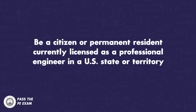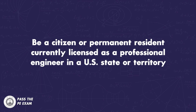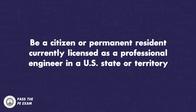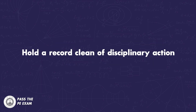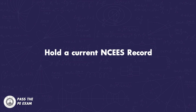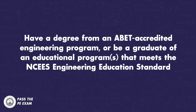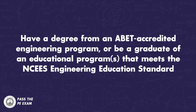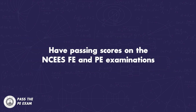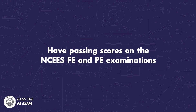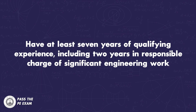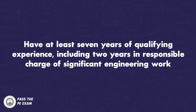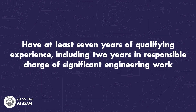Requirements. In order to qualify for this process, you're subject to the following. You must be a citizen or permanent resident currently licensed as a professional engineer in a US state or territory. Hold a record clean of disciplinary action. Hold a current NCWES record. Have a degree from an ABET accredited engineering program or be a graduate of an educational program that meets the NCWES engineering education standard. Have passing scores on the NCWES FE and PE examinations. Have at least seven years of qualifying experience, including two years in responsible charge of significant engineering work.